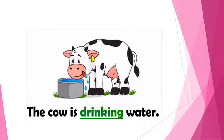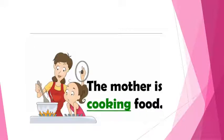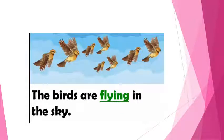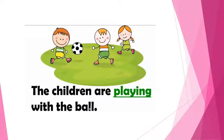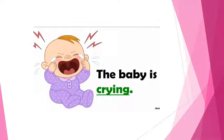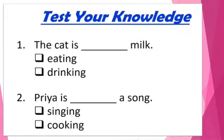Now let us look at a few more examples and recollect all the action words being done by these people: eating, looking, studying, playing, sleeping, cooking, etc. These were the actions performed by these people or animals. Hope you all have understood what doing words or verbs are.